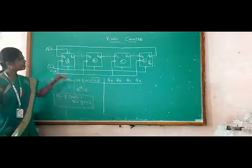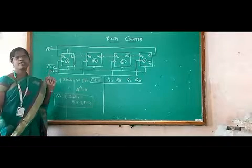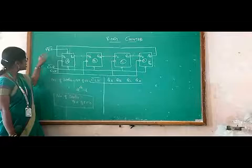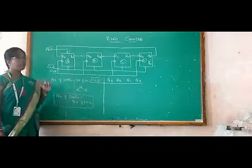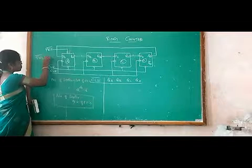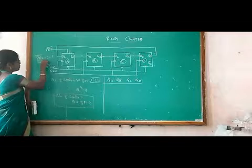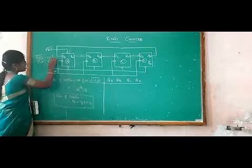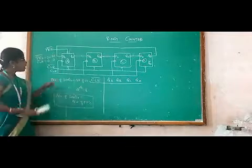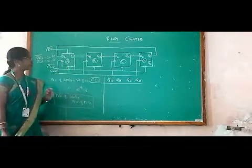The Q output of the last flip-flop is fed straight back to the input of the first flip-flop. One more thing is that the preset and the clear connection is given in ring counter. When the preset value is equal to 0, the output is 1. When the clear value is equal to 0, the output is 0. This preset is helpful in order to maintain the initial flip-flop value equal to 1.